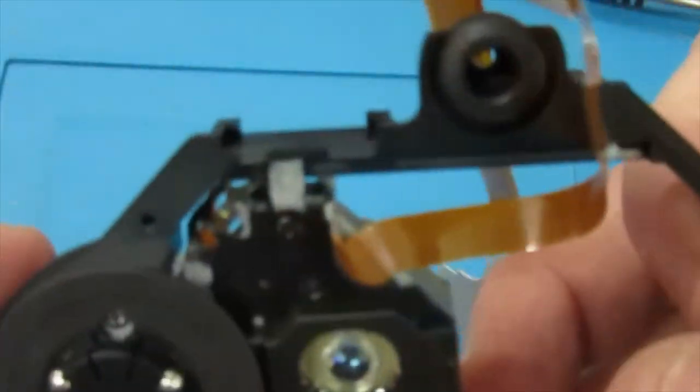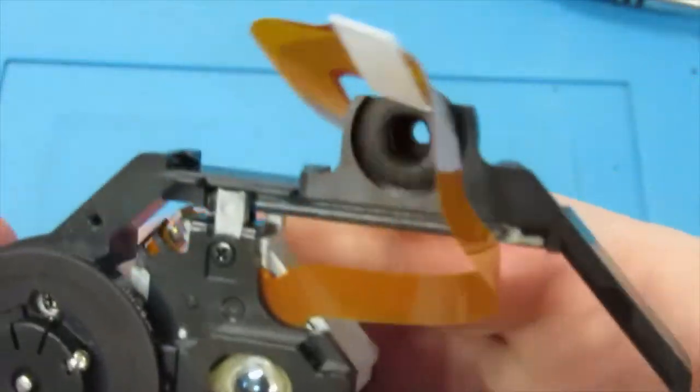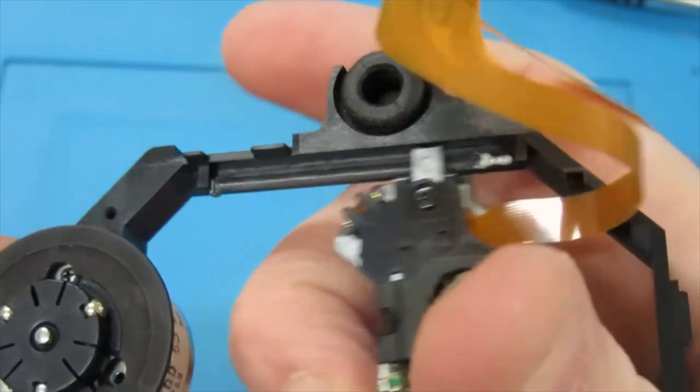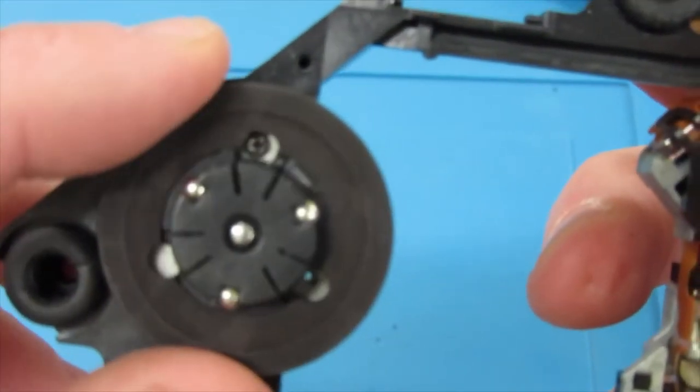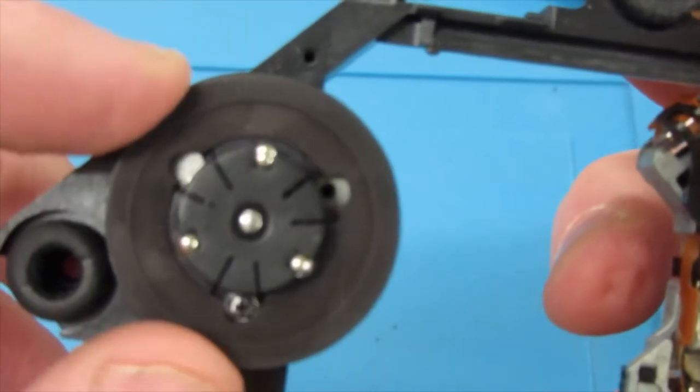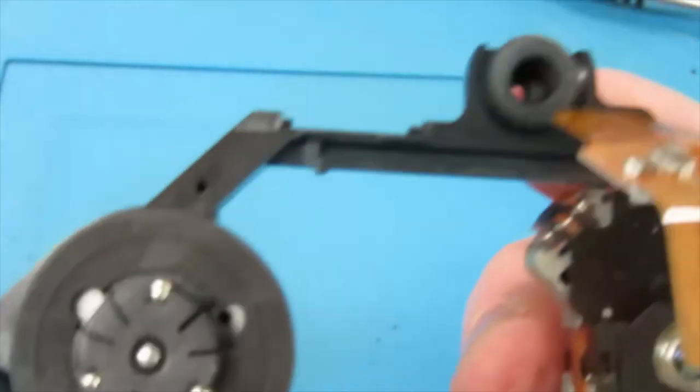After desoldering that, just pull the laser back out of the way. The next step is when you turn the spindle, you can see it turns here to a screw here and a screw here. After you undo them, it will be able to slide out.